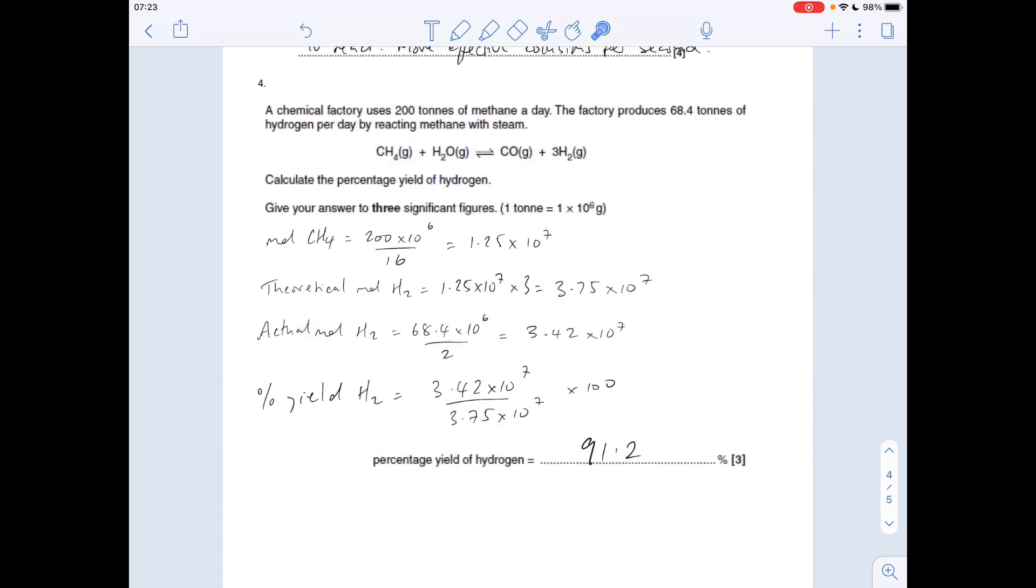The last question, not really rates of reactions—percentage yield, this one. Calculate the percentage yield of hydrogen from this reaction, giving your answer to three significant figures. We've got the ton conversion; the masses are given in tons. First thing we'll work out is the moles of methane used in a typical day: mass over MR. There's your conversion there—it's 200 million grams, so it's that many moles. Look at the ratio: theoretically, we get three times as many moles of hydrogen produced, so that number there.